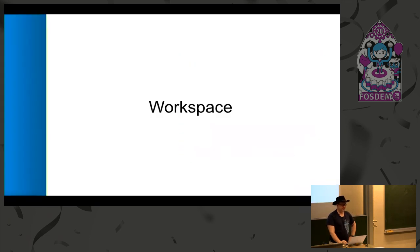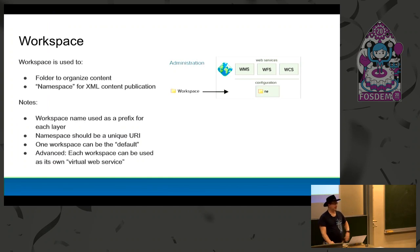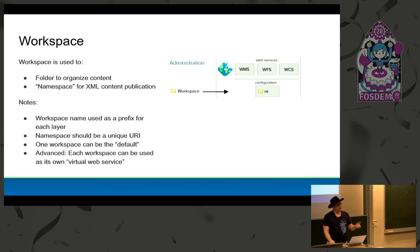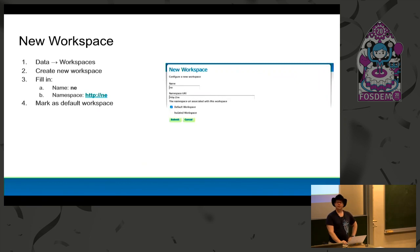My examples use Natural Earth. To begin with, your data is collected into individual workspaces — these are like folders which you can use to organize content. Each workspace is considered a distinct XML namespace for all those formats that really like XML. The workspace also has a name used as a prefix when talking to individual layers. You can hit New Workspace, fill in a little bit of information, and you've got a new empty workspace. As an advanced point, each workspace can be its own distinct web service — so if you're supporting dozens of teams, you might want to set up a workspace for each team.